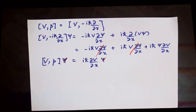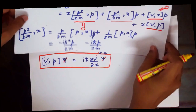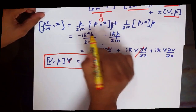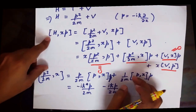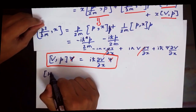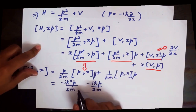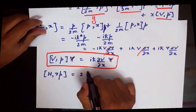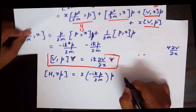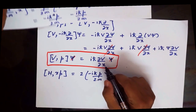Now we have both commutators needed. Combining them, the full commutator [H, xp] equals [p²/2m, x]·p plus x·[V, p], which gives −ih-bar · (2p²/2m) plus ih-bar · x · del V/del x. That is, [H, xp] = −ih-bar · p²/m + ih-bar · x · del V/del x.